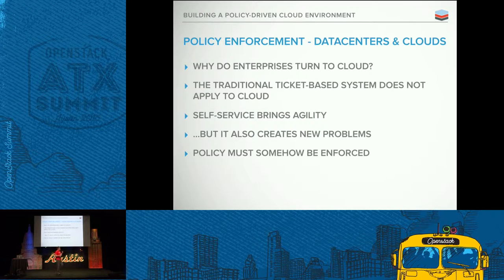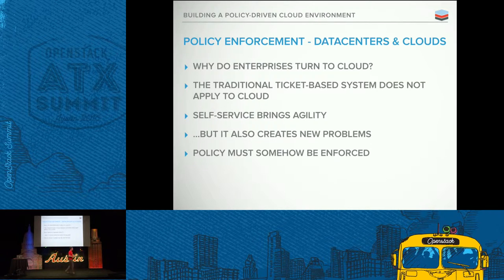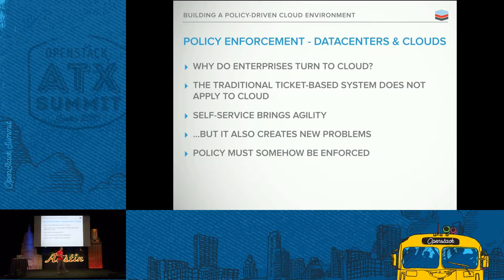So first of all, why do enterprises turn to cloud? Why do the big retailers and the big banks, what are their main drivers that make them go to AWS, Azure, GC, and OpenStack — what we can call the big four? Usually you get two main drivers: agility, or more simply getting things done faster, getting those resources faster, being able to provision something faster, or speed to market. And the other might be cost — it's supposed to be cheaper.